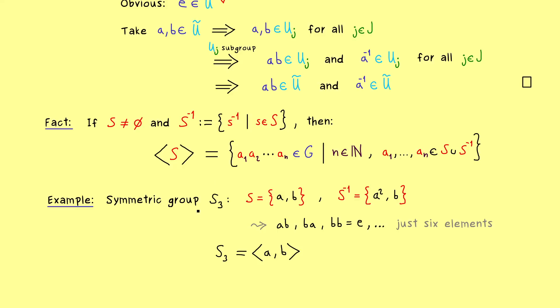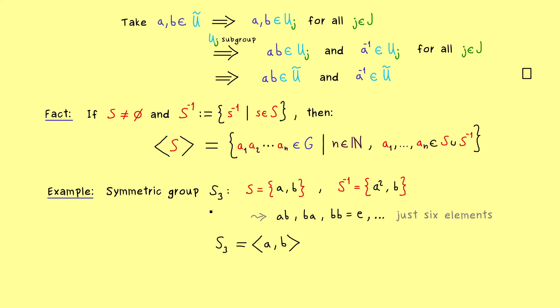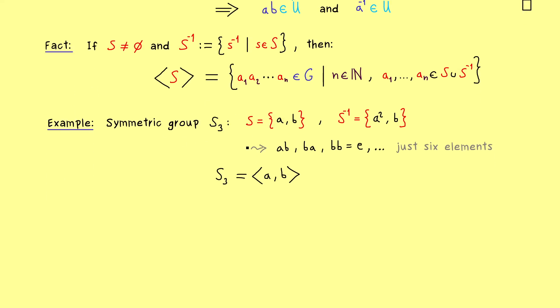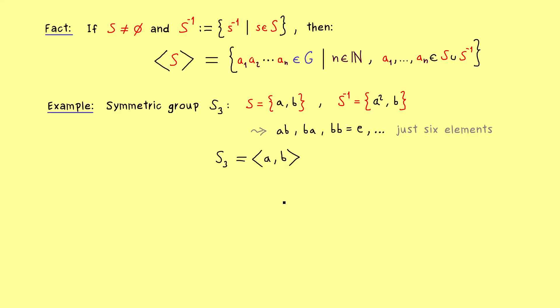We already see that problem in this small example, so maybe now imagine a really big group, where we want to calculate the subgroup generated by two elements. So in general this is not simple at all, so the only easy case we can actually calculate quickly is when we only have one generator. And this finally leads us to the title of this video, a cyclic group.